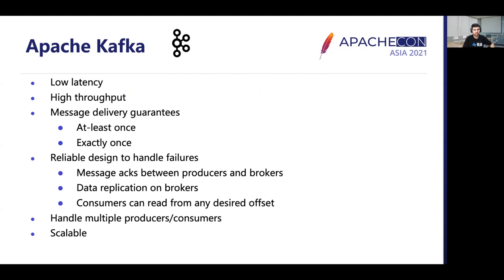Here are some key features of Apache Kafka: very low latency and high throughput delivery of data; multiple message delivery guarantees such as at-least-once and exactly-once; reliable design for handling failures including message acknowledgments between producers and brokers and data replication on brokers; consumers can read from any desired offset to handle failures; it supports multiple producers and consumer groups, where one topic can be consumed by multiple consumer groups; and it is scalable and can handle very high volumes of data.